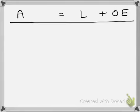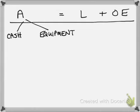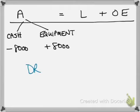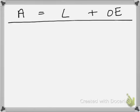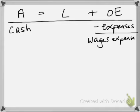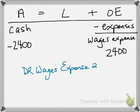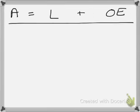We paid eight thousand dollars cash to purchase equipment: cash is going to go down and equipment is going to go up, so we debit equipment for eight thousand and credit cash for eight thousand. Now for the twenty-four hundred dollar payment for wages for the staff assistant: cash is going down by twenty-four hundred dollars and wages expense is increasing by twenty-four hundred, therefore we debit wages expense twenty-four hundred and credit cash twenty-four hundred.